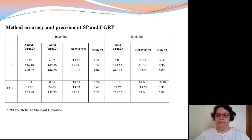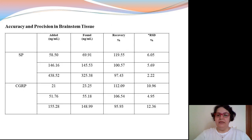Our significant findings are that it was the first fully validated study on simultaneous determination of these neuropeptides in brainstem tissue. A simple, one-step tissue procedure consisting of acetic acid homogenization was used in the LC-MS-MS method developed in the study. The applicability of two-step acetic acid procedures has been recommended in the literature already.